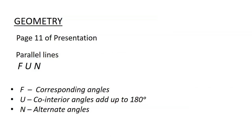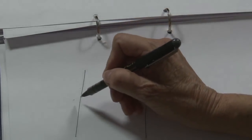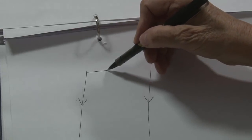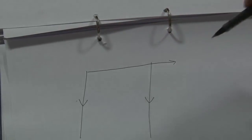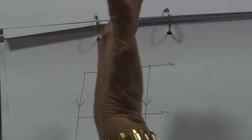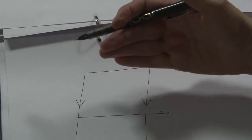Now let's go to geometry — it's on page 11 of the presentation. I will draw it for you. It's two parallel lines — parallel lines are indicated by arrows on the lines. So this one is parallel to that one, and that one is parallel to that one.